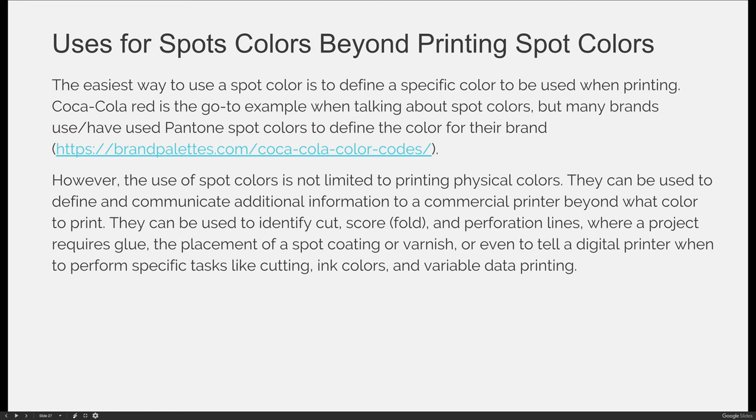However, the use of spot colors is not limited to printing physical colors. They can be used to define and communicate additional information to a commercial printer beyond what color to print. They can be used to identify cut, score, fold, and perforation lines when creating a dye line. You can also identify where a project would need or require glue, the placement of a spot coating or a varnish. You can even tell a digital printer — not the person, but the machine — when to perform specific tasks like cutting, or use ink colors to activate variable data printing. There are a number of things that spot colors can be used for.